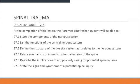At the completion of this lesson, the paramedic student should be able to state the components of the nervous system, list the functions of the central nervous system, define the structure of the skeletal system as it relates to the nervous system, and relate mechanisms of injury to potential injuries of the spine.